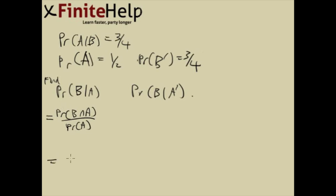Here, probability of A is given, that's one half. That's really easy. B intersect A isn't given, so we kind of have to use the pieces of the puzzle to solve for it.